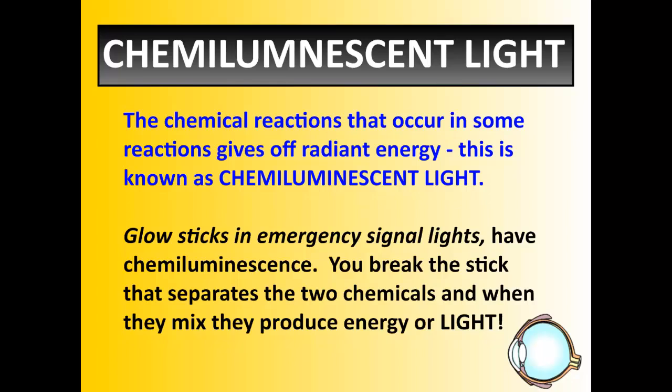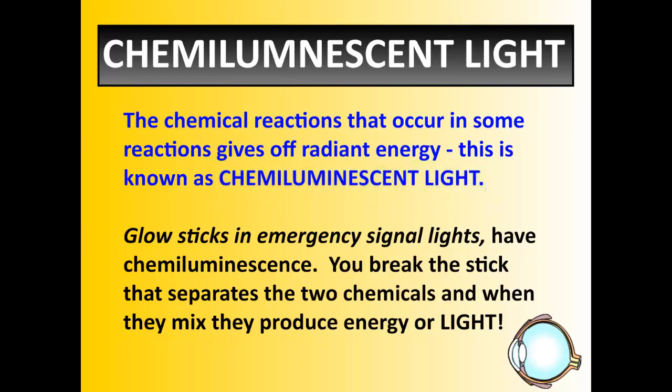The last type is chemiluminescent. Chemi clearly indicates chemical — the chemical reactions that occur in some reactions give off radiant energy or light energy, which is known as chemiluminescence. Glow sticks and emergency signal lights are examples of chemiluminescence. Whatever's inside the glow sticks, you break them, causing two chemicals to combine, which then generate or produce light. Chemiluminescent — light from chemicals.